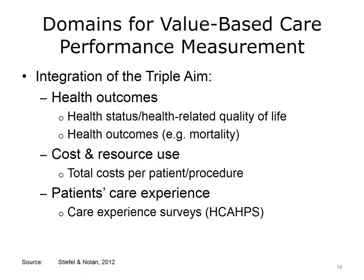Measuring the success of efforts to achieve the triple aim requires quantifiable data on various care components. There is a need to establish a system of metrics and measurements that serve to assess progress in achieving the various aims. Some of the needed data include health outcomes important to populations — such as measures of health status or health-related quality of life, as well as health outcomes such as mortality. Data on costs of care and resource use — such a metric might be the total cost per patient per procedure. And finally, we need measures of patients' perception of their care experience. Care experience surveys, such as HCAHPS, have been used to obtain these measures.